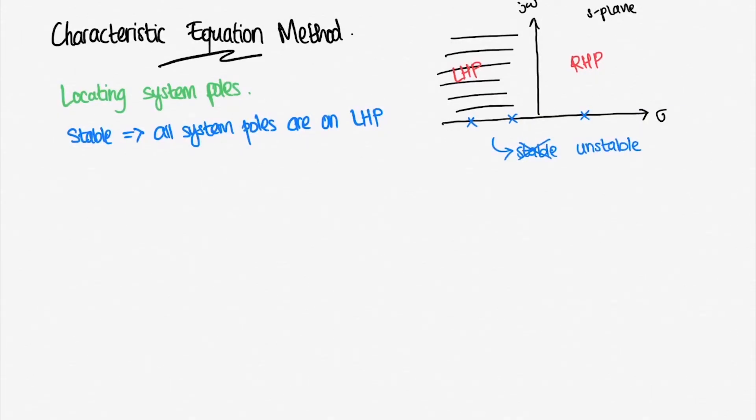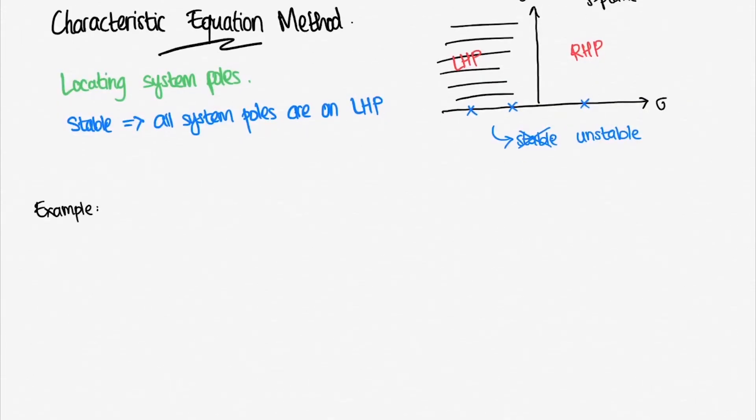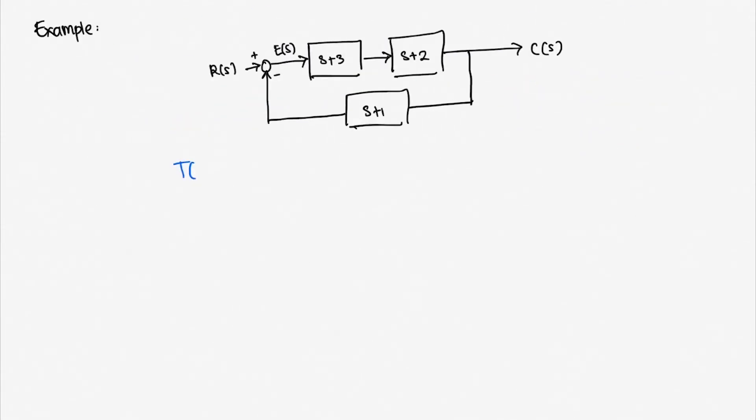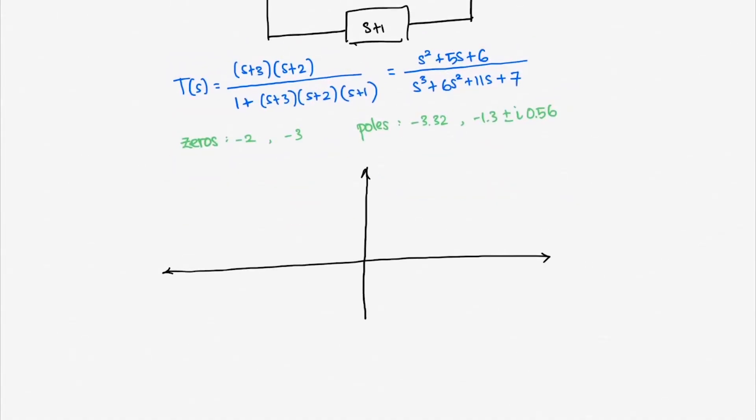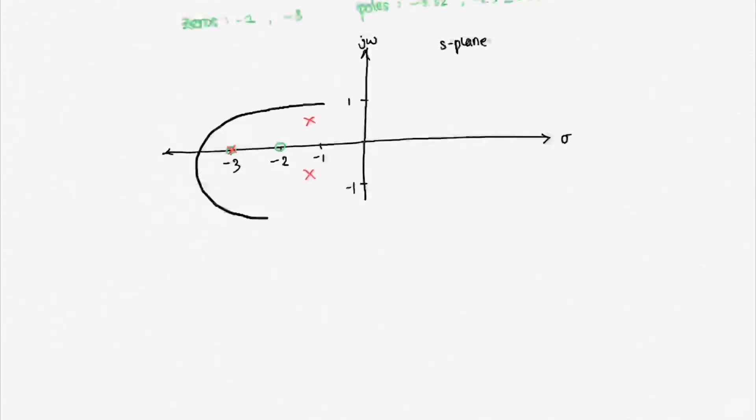It's good to use an example again. From the previous explanation, we will get this transfer function after simplifying the block diagram. Factoring out the equation, we get the following zeros and poles. Then we draw the poles and zeros in the s-plane. Earlier, I said that a system is said to be stable if and only if all the poles are located on the left half plane. So our system is stable.